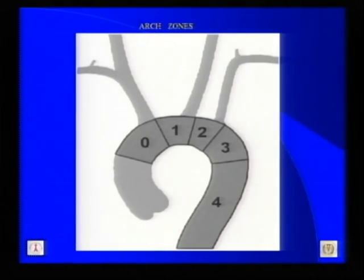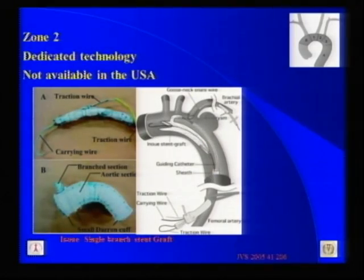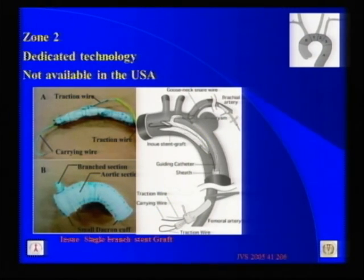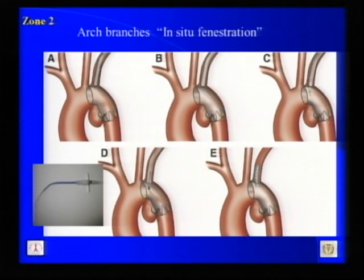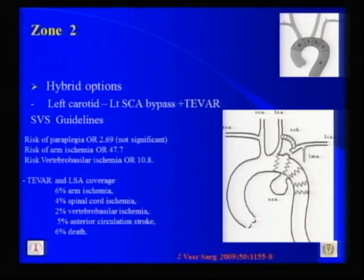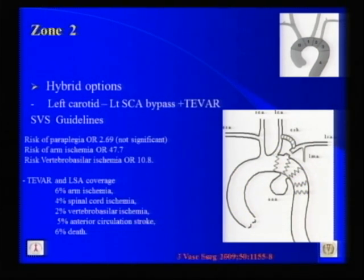These are the aortic zones by Dr. Criado's classification. Starting with Zone 2, which is the origin of the left subclavian artery, there is no dedicated technology. In Japan, the Inoue single stent graft has been used and published since 2005. The most common endovascular hybrid option is a single chimney to the left subclavian and a retrograde exposure via the brachial artery or an in-situ fenestration. The more classic option is a left carotid to left subclavian bypass and then TEVAR coverage of the origin of the subclavian. This has been widely supported by the Society of Vascular Surgery guidelines to be performed every time you electively cover the subclavian artery, to prevent arm ischemia, paraplegia, and posterior circulation strokes.